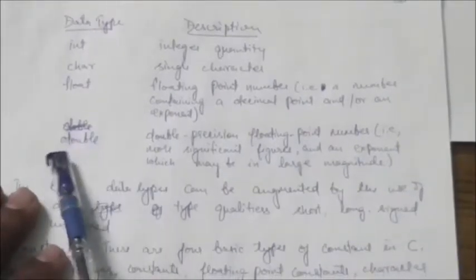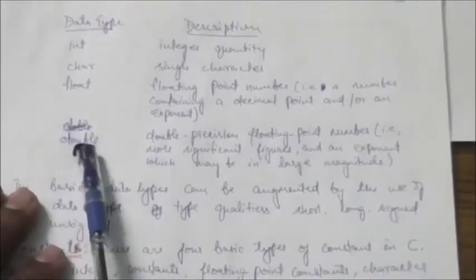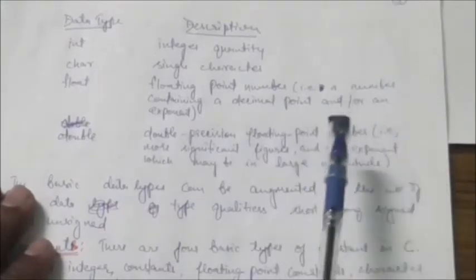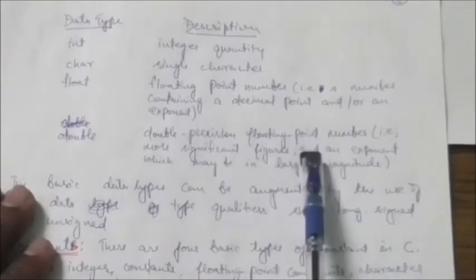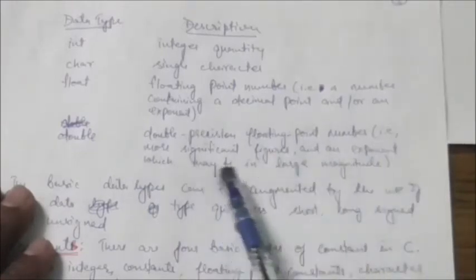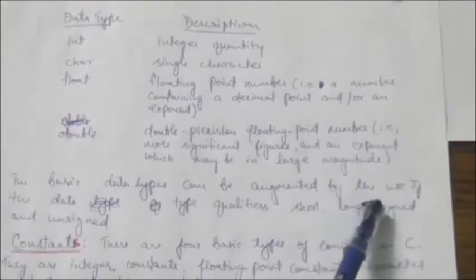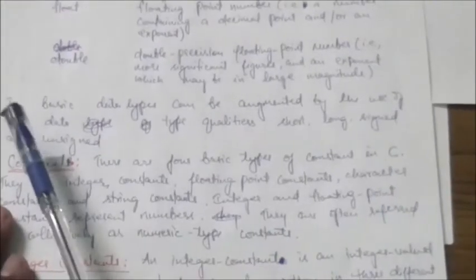Another data type supported by C is double, meaning double precision floating point numbers with more significant figures and exponents which may be in large magnitude.